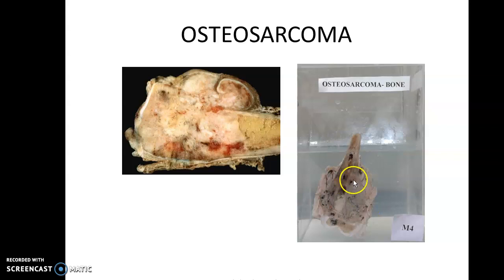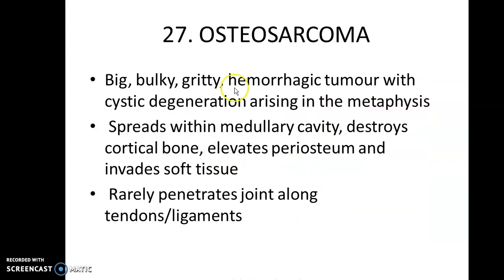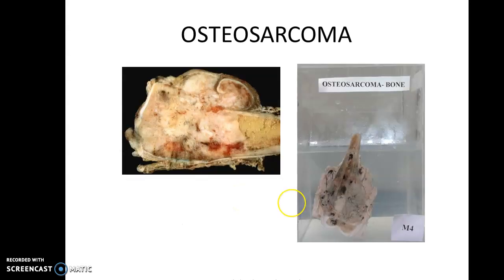You start describing it: what you find here is a tumour involving the metaphysis, infiltrating into the adjacent tissue and lifting the periosteum. It is a bulky, gritty, hemorrhagic tumour with cystic degeneration arising in the metaphysis, spreading within the medullary cavity, destroying the cortical bone, elevating the periosteum, invading the soft tissue, and rarely penetrating joints along the tendons and ligaments.